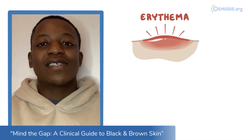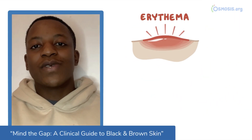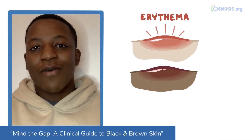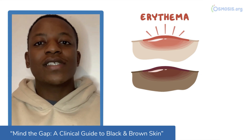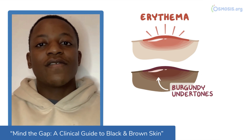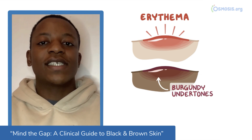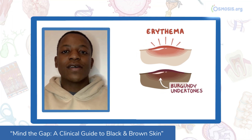In lighter skin tones, this will be fairly visible with the naked eye. However, in darker skin tones, it's important to look for the burgundy undertones of the skin which help to detect arrhythmia.